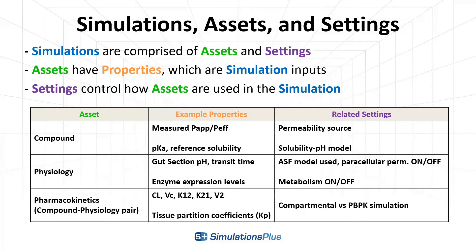Similarly, pH values and transit times in the gut are properties of a given physiology, but the ASF model used is a setting selected at the simulation level. Pharmacokinetics are a bit of a special case in GPX, as they are properties of a compound-physiology pair. For example, a compound may have different distribution and clearance in rats versus humans, so these properties are specific to each species for that drug. Likewise, two different compounds may have different tissue partition coefficients, even when paired with the same physiology.